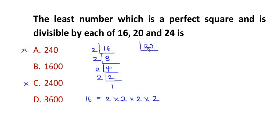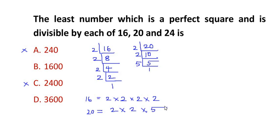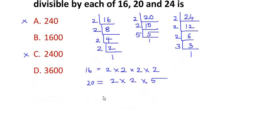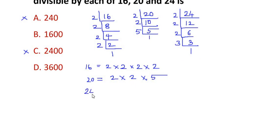For 20, using prime factorization: 2 times 10 is 20, 2 times 5 is 10, so the factors of 20 are 2 × 2 × 5. For 24: 2 times 12 is 24, 2 times 6 is 12, 2 times 3 is 6, so the factors of 24 are 2 × 2 × 2 × 3. Now let us find the LCM.